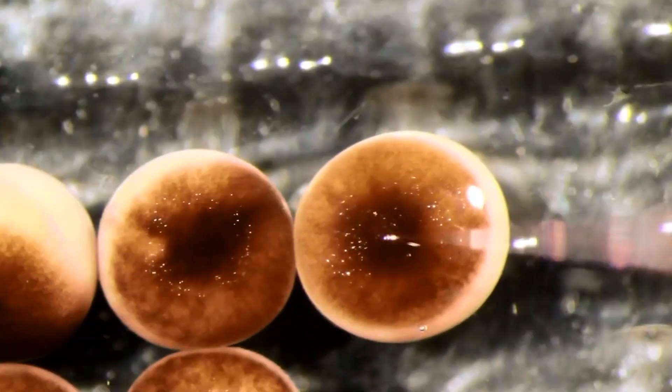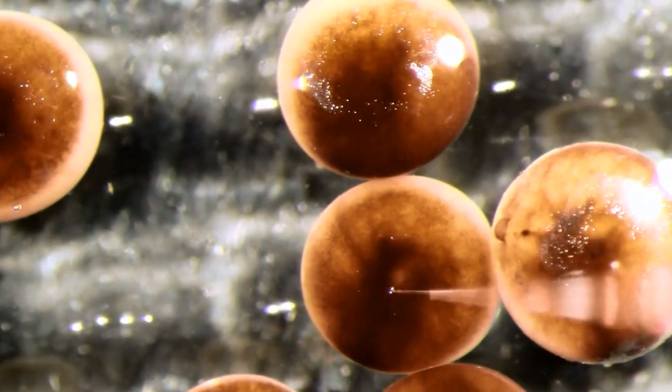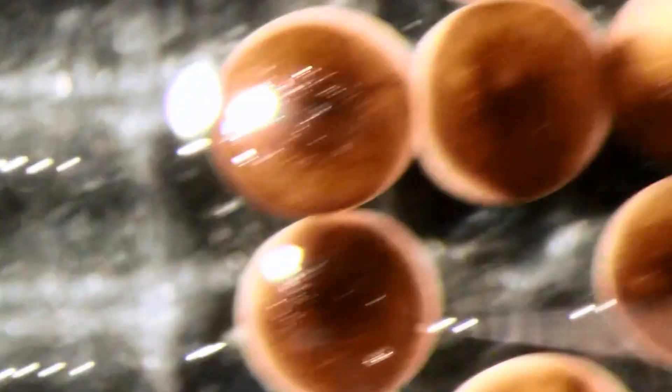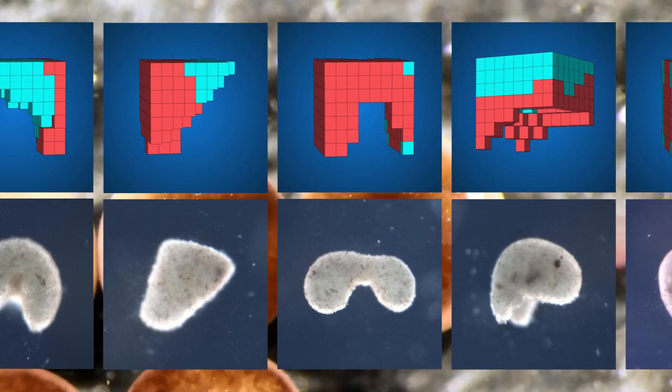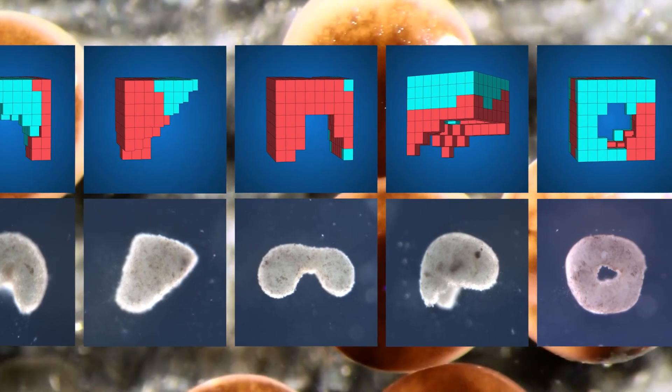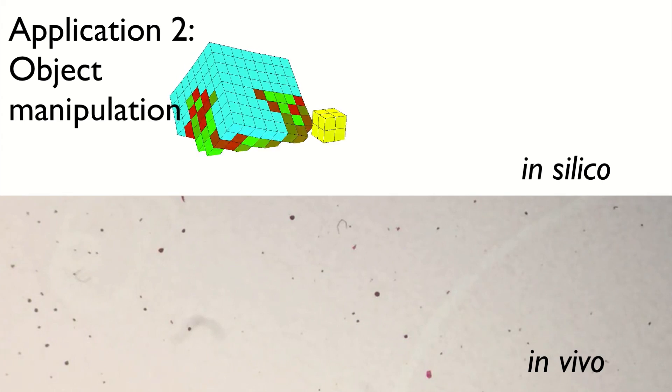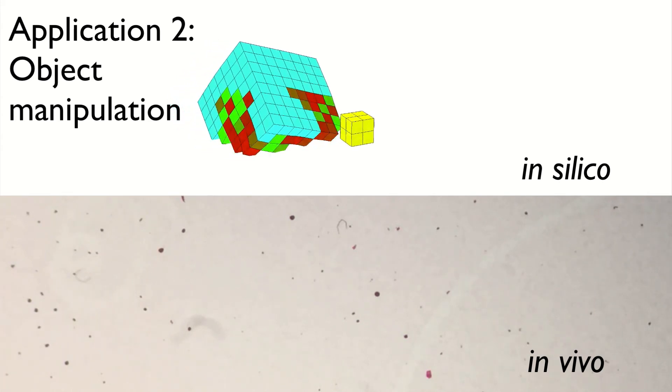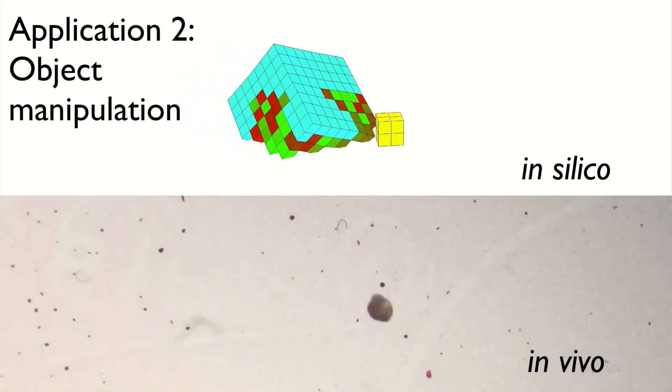On closer inspection, what is actually reported by the scientific team behind the development is that one particular design of their xenobots has been successfully engineered to create continuous copies of itself, until it runs out of steam around the fourth generation and also requires some human help along the way.